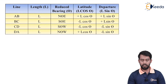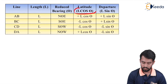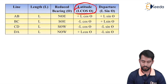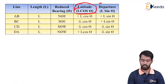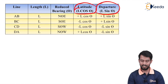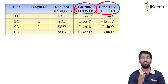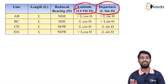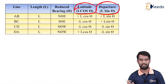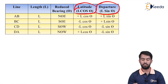To find out latitude, the formula is L cos θ. Latitude is equal to L cos θ and departure is equal to L sin θ. Depending on the reduced bearing or the position of your point — whether it is in the first quadrant or second quadrant — the latitude and departure signs may vary, whether negative or positive.